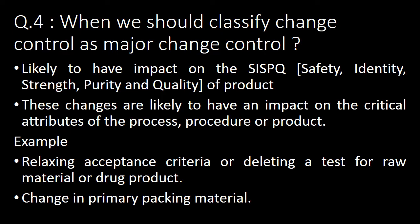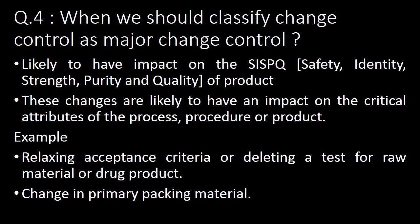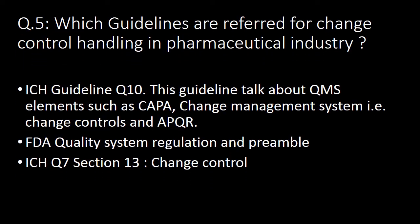Examples of major change controls are relaxing acceptance criteria, deleting a test of raw material or drug product, and change in the primary packing material, which shall also be classified as a major change control.